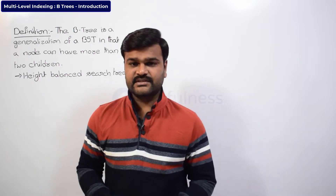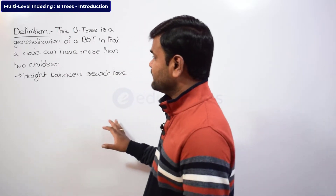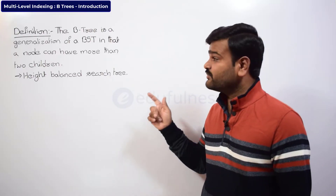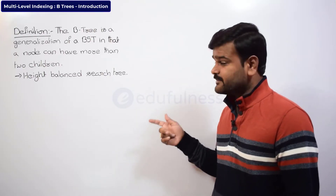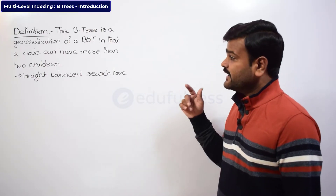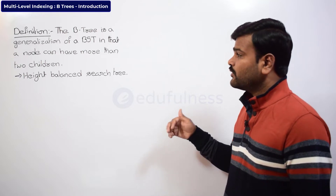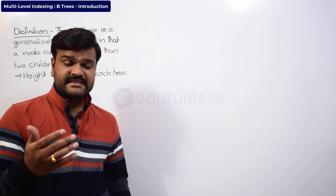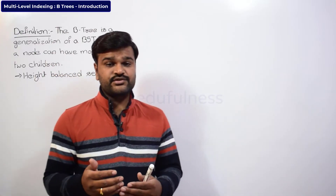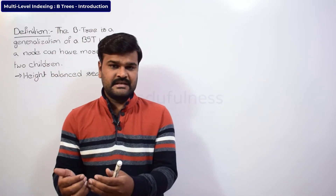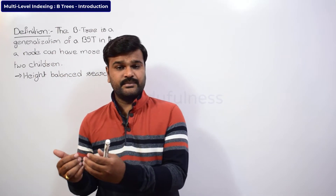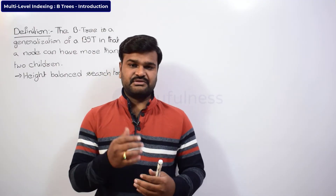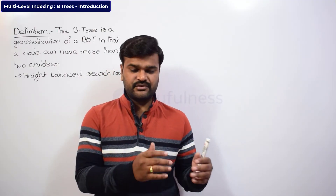Let us see the definition of B-trees. A B-tree is a generalization of a binary search tree (BST), where a node can have more than two children. In a binary search tree, a node can have at most two children, but in a B-tree, a node can have more than two children.